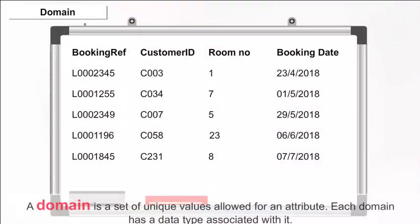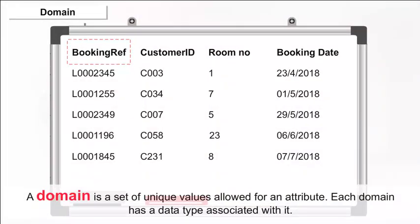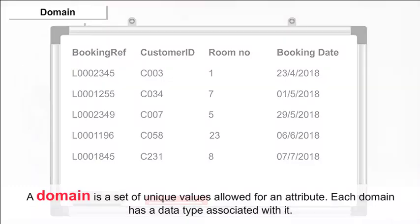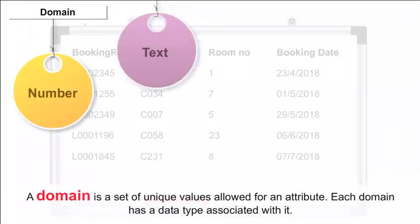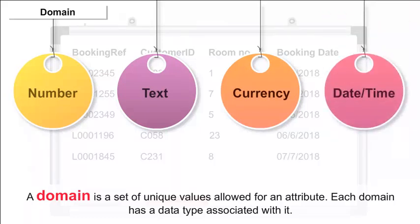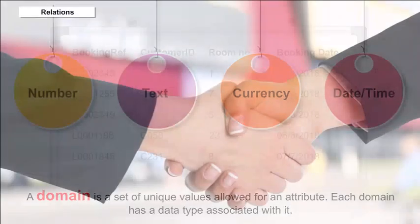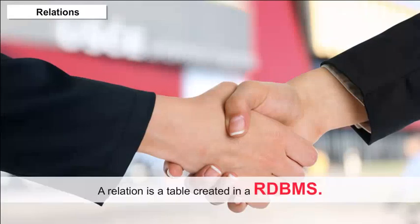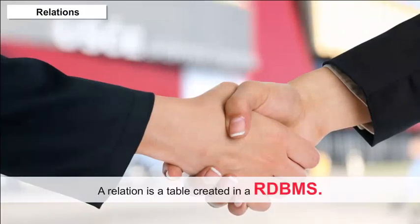Domain — a domain is a set of unique values allowed for an attribute. Each domain has a data type associated with it, such as number, text, currency, date or time, etc. Each domain must have a name that helps in interpreting its values.